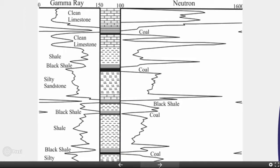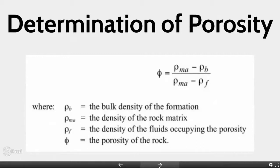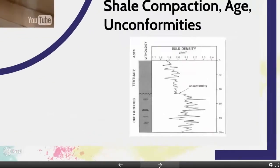The porosity of a formation can be obtained from the density if the mean density of the rock matrix and that of the fluids it contains are known. When solved for porosity, the formula is: φ equals (ρma minus ρb) divided by (ρma minus ρf), where ρb is the bulk density of the formation, ρma is the density of the rock matrix, ρf is the density of the fluids occupying the porosity, and porosity is labeled by the Greek letter phi.